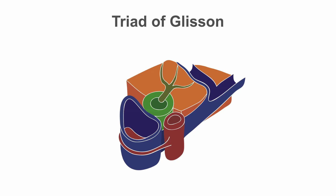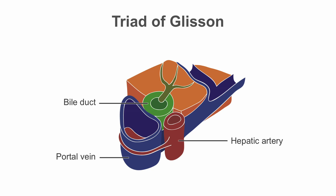When using ultrasound to find bile ducts or hepatic artery branches, it is always important to know that a bile duct and the hepatic artery run alongside the portal vein. They are surrounded by echogenic connective tissue. This structure is called the triad of Glisson, sometimes also referred to as the portal triad.